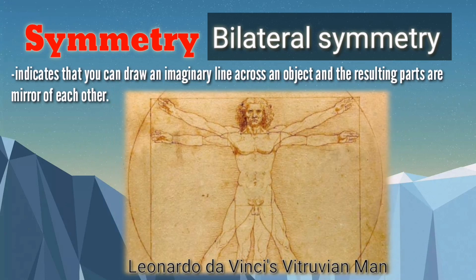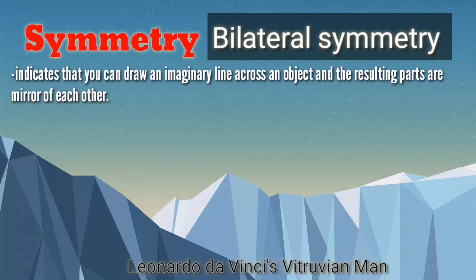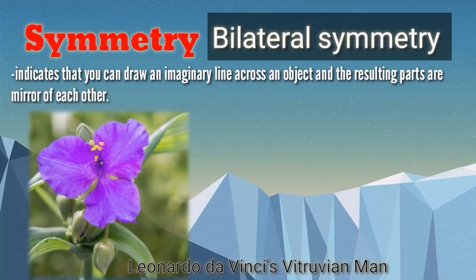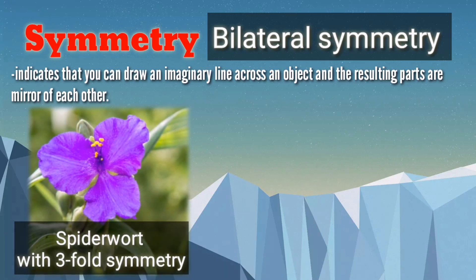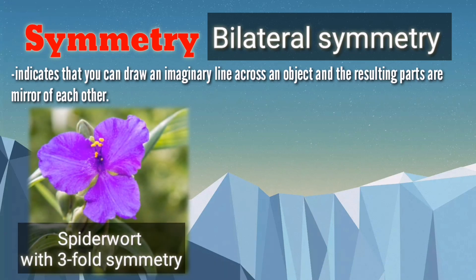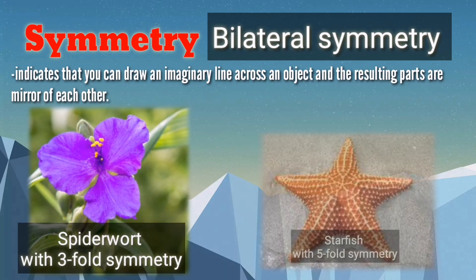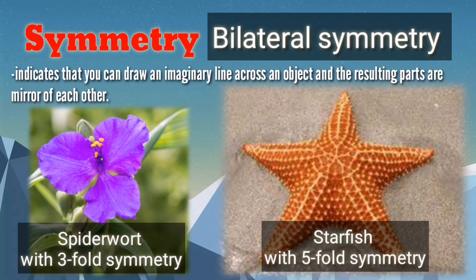Leonardo da Vinci's Vitruvian Man shows the proportion and symmetry of the human body. In plants, we have the spiderwort with threefold symmetry. Also, this starfish has a fivefold symmetry.